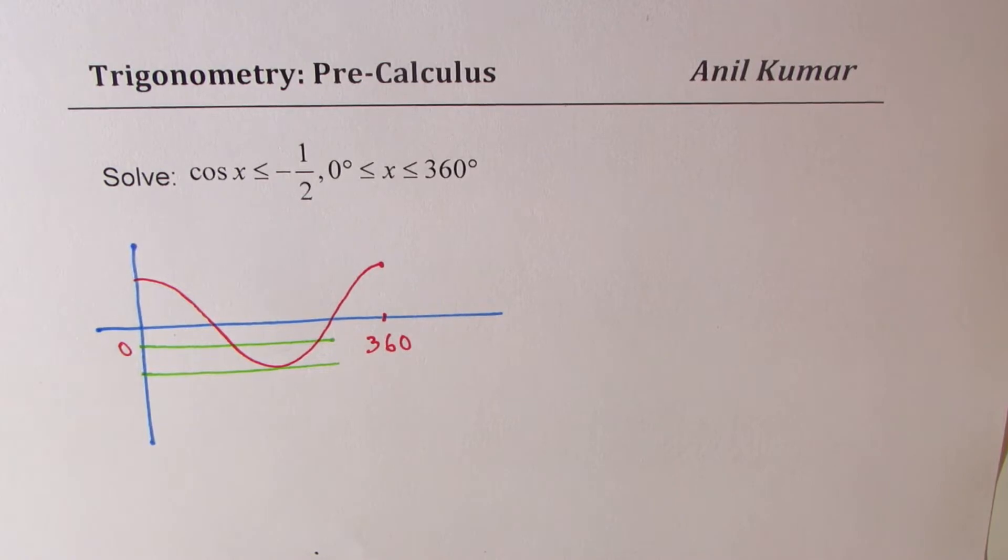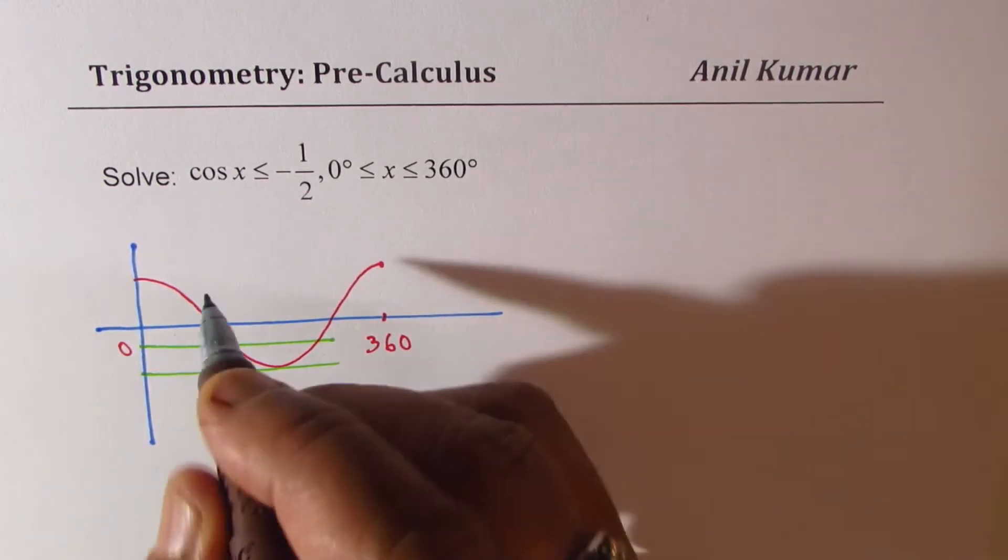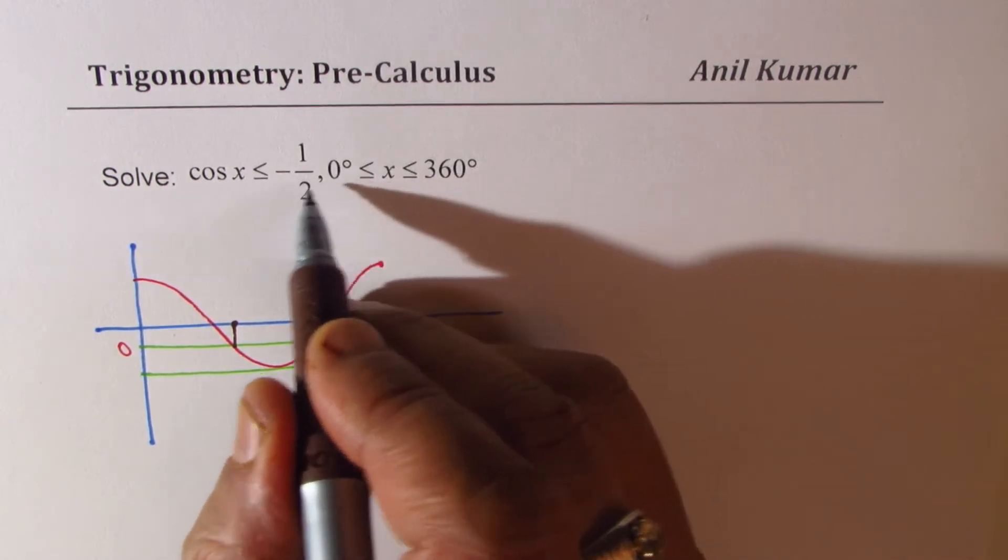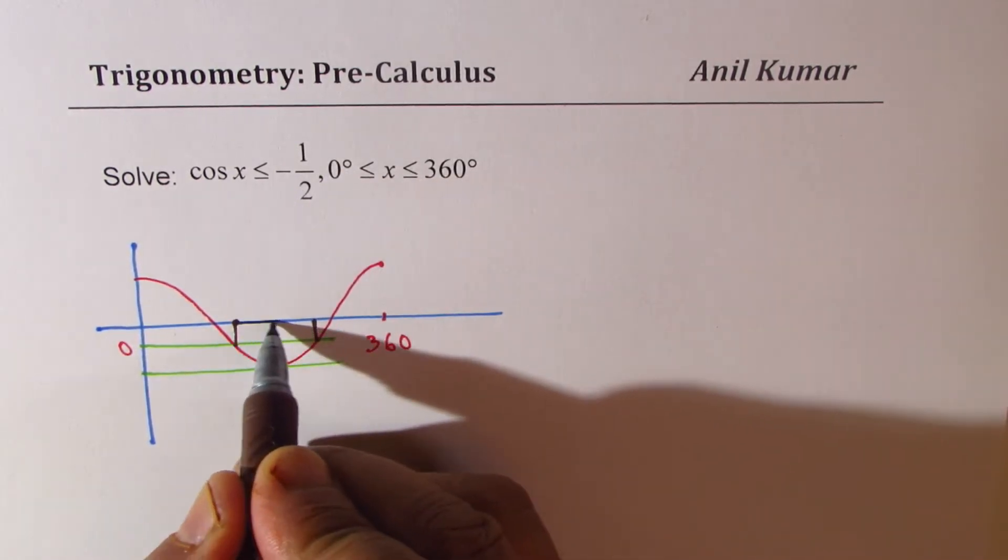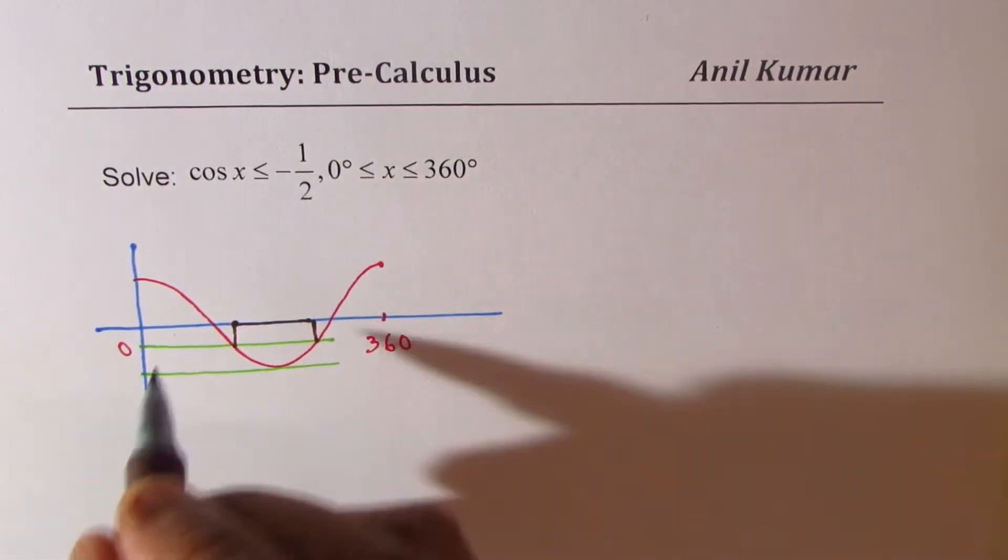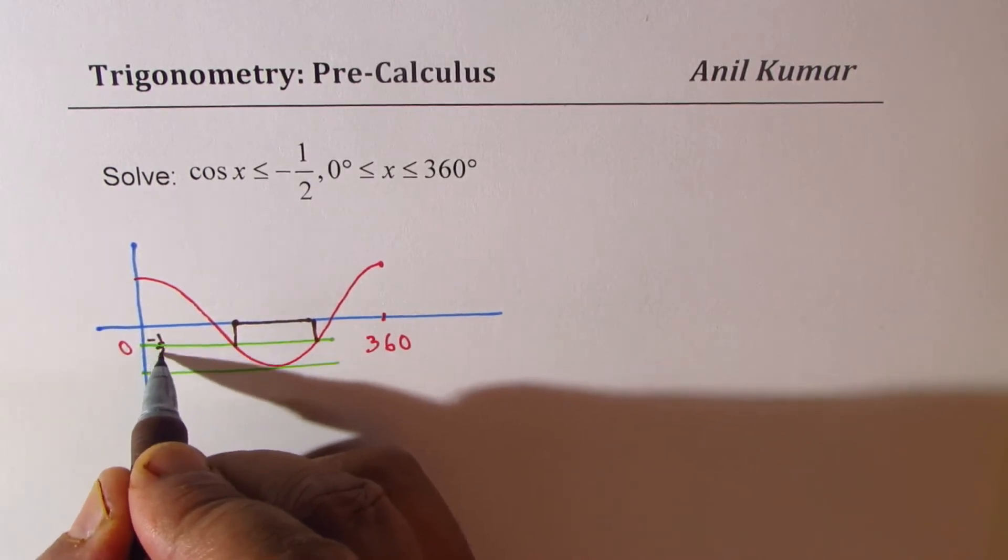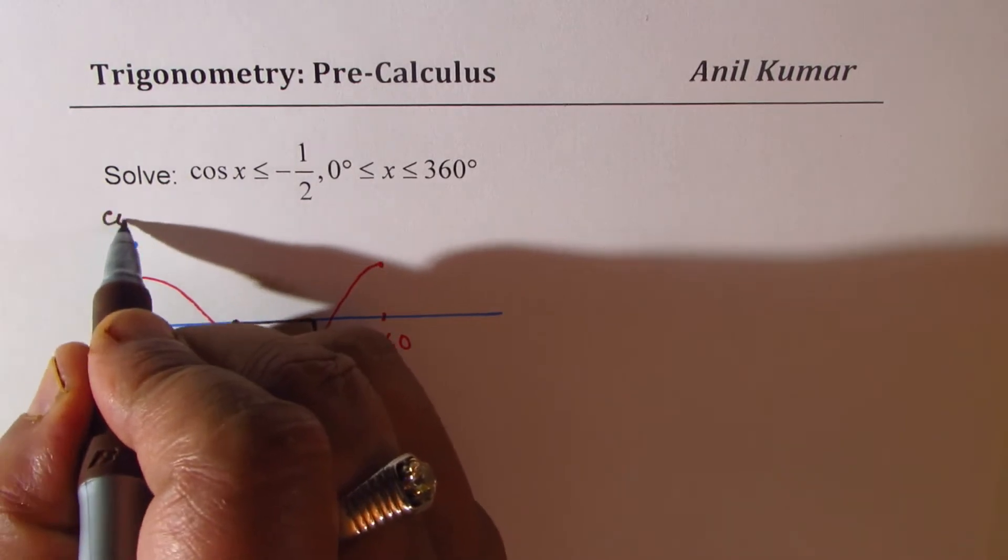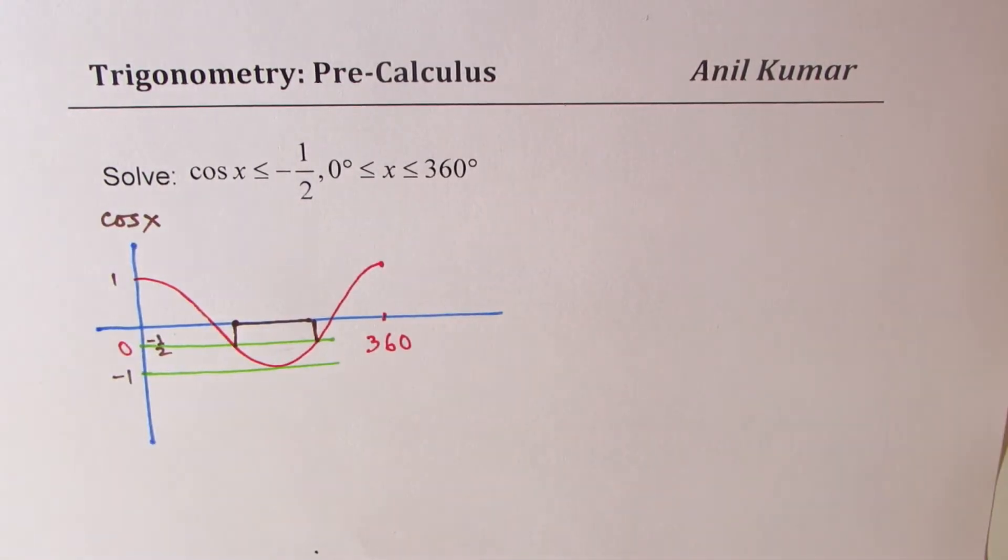And clearly, the solution for us is right there. Since I have included minus half, that becomes the solution. Where this is minus half, that is minus 1. Does it make sense? And we are working on cos x.